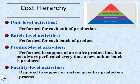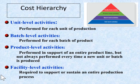Finally, we have facility-level activities, which are required to support or sustain an entire production process. Consider a hospital: the building must be insured and heated, and property taxes must be paid no matter how many patients the hospital treats. These costs do not vary as a function of the number of units, batches, or products. Companies may achieve greater accuracy in overhead cost allocation by recognizing these four levels of activity and developing specific activity cost pools and their related cost drivers.